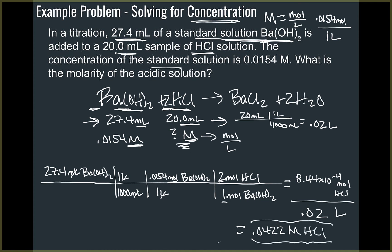That's the concentration of the unknown. To recap: start with the balanced equation, label all given information, start with the volume of the substance you know more about, convert milliliters to liters, use molarity to convert to moles, use the mole ratio to get moles of the other substance, then divide by liters of that substance to get the final molarity. That's the general path whenever the question asks for concentration.